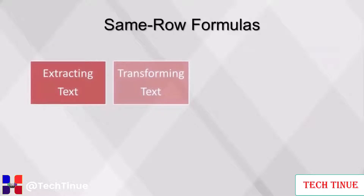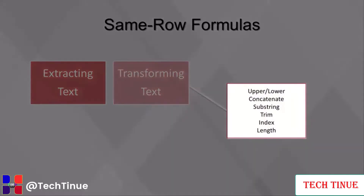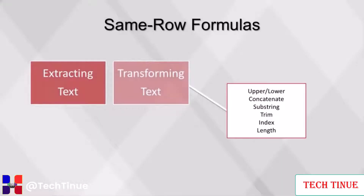Formulas can also be used to extract and transform strings from a text field. The most common string functions are: upper/lower, used to change the field to all upper or lowercase characters; concatenate, which combines two or more strings into one field; substring, used to extract a portion of a string; trim, which removes certain characters, usually spaces, from a field; index, used to find the location of a certain string within a field; and length, which finds how many characters are in a field. These basic string functions can be combined to complete almost any string transformation.